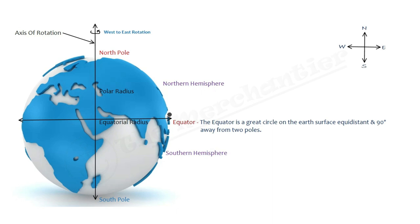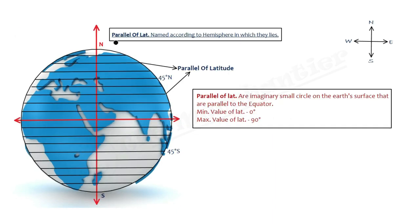The Northern Hemisphere and Southern Hemisphere. The great circle is equidistant and 90 degrees away. If we compare polar radius and equatorial radius, the equatorial radius is higher than polar radius.